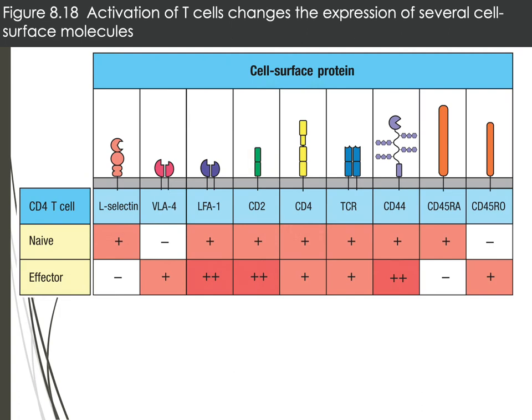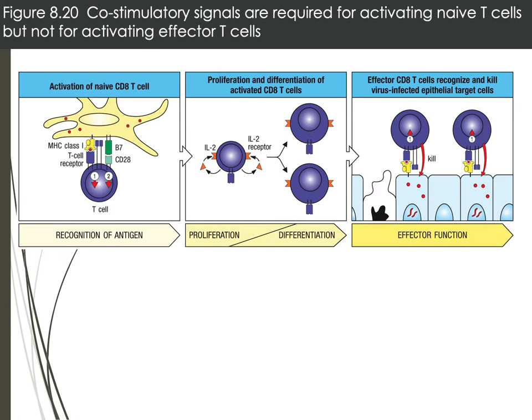Just as during T-cell development, activation also causes changes in surface molecule expression. Between naive and effector T-cells, molecules like VLA-4, LFA-1, CD2, and CD44 become upregulated in effector cells. These are important for the effector cell to carry out its function. Co-stimulatory signals are required for activation — without them, naive T-cells will not become activated.